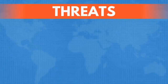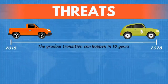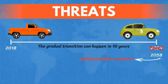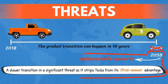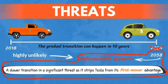The last piece of our SWOT analysis covers the threats ahead of the company. As mentioned before, the gradual transition to electric vehicles can happen in 10 years, but it can also take 40 or more years. In a less favorable scenario, a slower transition is a significant threat because it strips Tesla of its first-mover advantage and puts it in a position to operate in a market that is not growing fast enough.